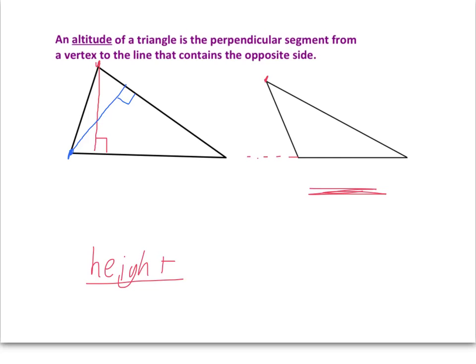Again, if you imagine that triangle being like a building, and you were standing at this point right up here at the top, and you were to fall straight down — you wouldn't be inside the triangle, you'd be falling straight down. So the altitude actually occurs outside the triangle. It's perpendicular to the line that contains the opposite side. So it's important to know that an altitude can actually occur outside of a triangle.